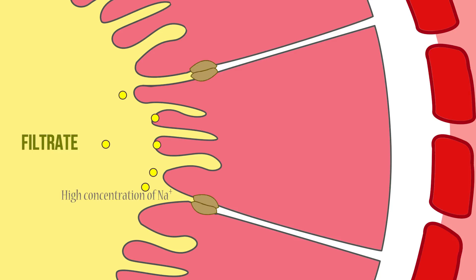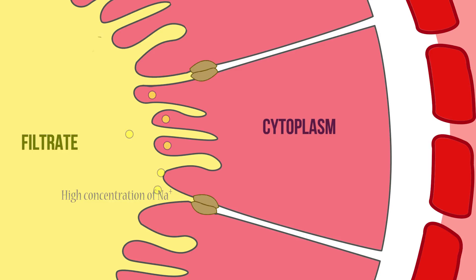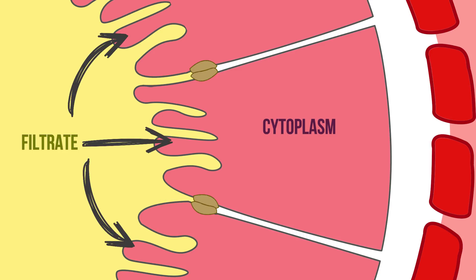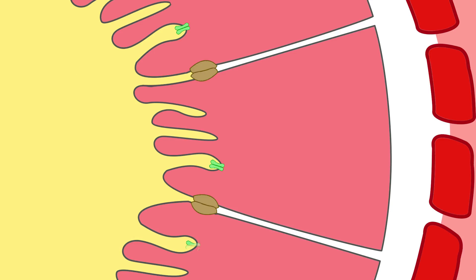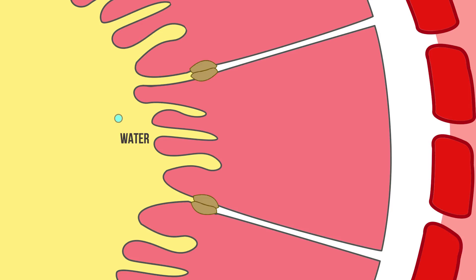This forms a concentration gradient for sodium ions from the contents of the tubule, where there is a relatively high concentration, into the cytoplasm. The sodium ions diffuse down this gradient from the fluid inside the tubule into the cells, passing through transporter proteins in their plasma membranes.